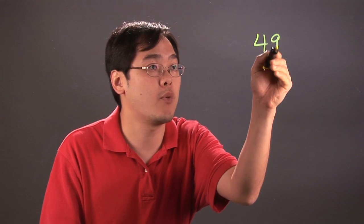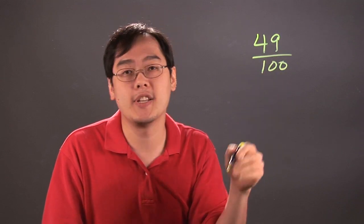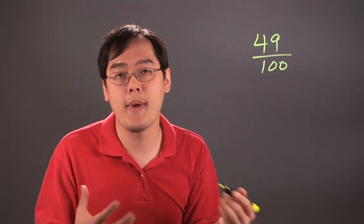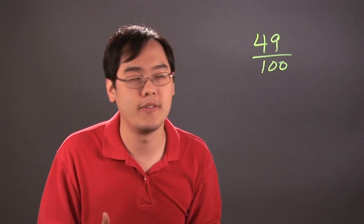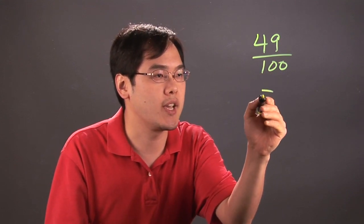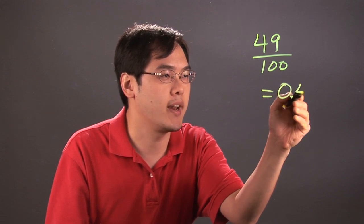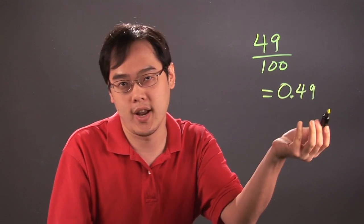So for example, one example of a fraction that can be renamed is if you have 49 over 100. Whenever you have a denominator of 100 you can automatically rename it as a whole number of hundredths really easily. 49 over 100 is just like saying 49 hundredths and you can rewrite it as 0.49.